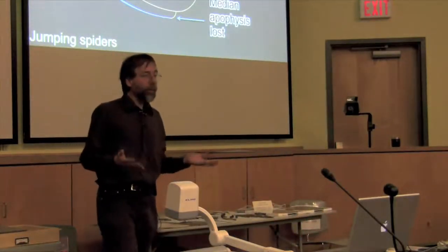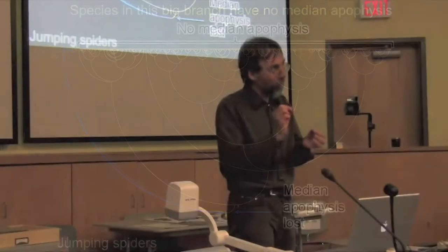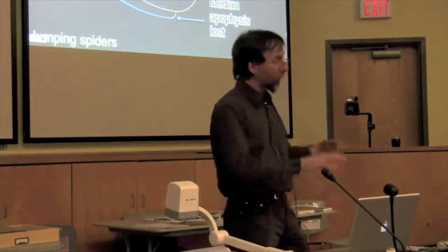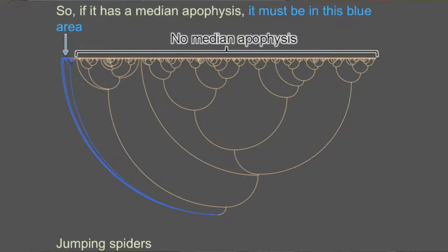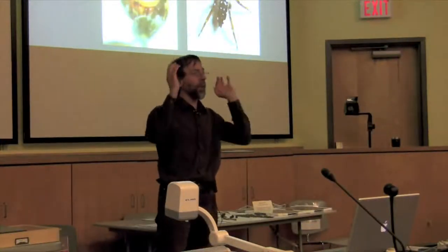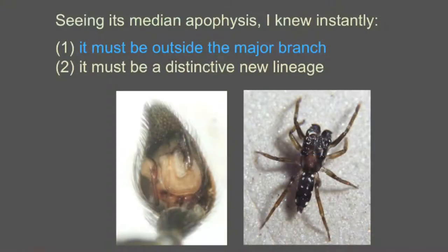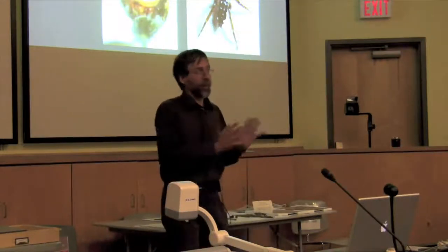How do you tell them apart? It turns out that species in this big branch have no median apophysis. For some reason, this moving part on the male palp was lost in evolution at the base of this great big branch. Which means that if it has a median apophysis, it must be in the blue area. And so what that means is that when I saw that median apophysis, I knew instantly two things. First of all, it must be outside the major branch. And remember, there were only two things known in Papua New Guinea that had the median apophysis. Those are the two I showed you. But not only is it outside the major branch, but it must be a very distinctive new lineage that we've never seen before because I knew pretty well what was in that blue area, and there was nothing that looked like this.